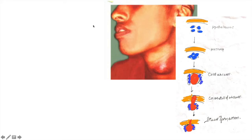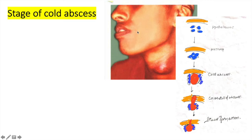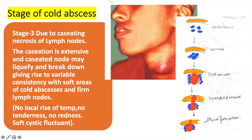The next stage is the formation of a cold abscess, due to caseating necrosis. This leads to extensive caseated material which may liquefy and break down, giving rise to variable consistency with soft areas of cold abscess and firm lymph nodes. The cold abscess is not associated with signs of acute inflammation — no local rise of temperature, no tenderness, no redness — and it appears as a soft, fluctuant swelling.